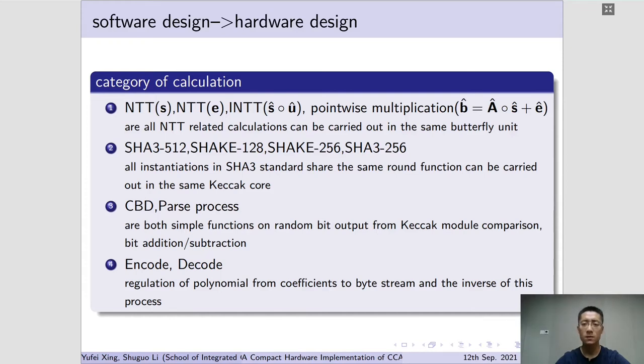Besides, the NTT calculation in Kyber is different from that in normal lattice-based cryptography protocols, and there would be some space to carry out optimization. Together with a proper Fujisaki Okamoto transform implementation, a compact design with decent performance can be expected.